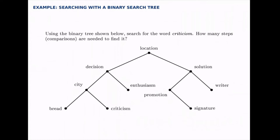Here we're given a binary search tree with a list of words ordered alphabetically, and we want to search for the word criticism. As we do so, we're going to keep track of how many steps or how many comparisons we need to find it.